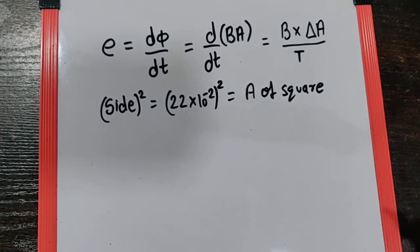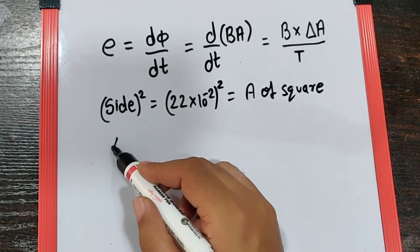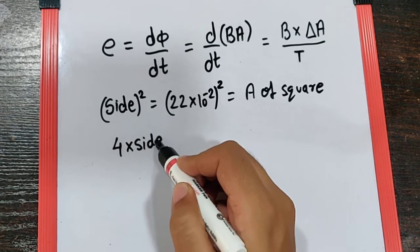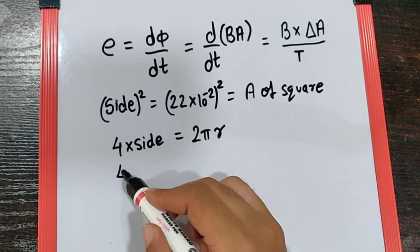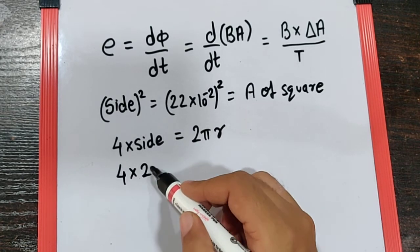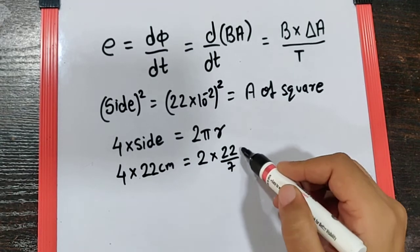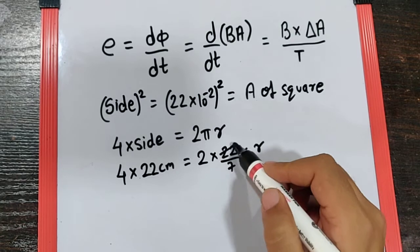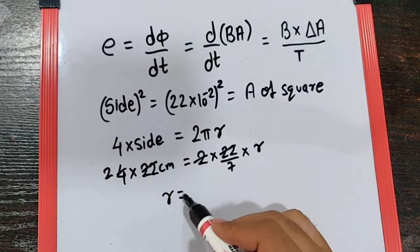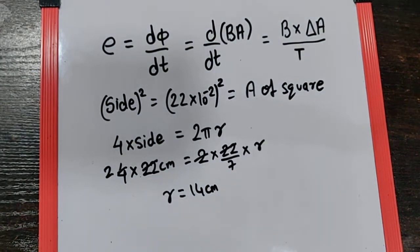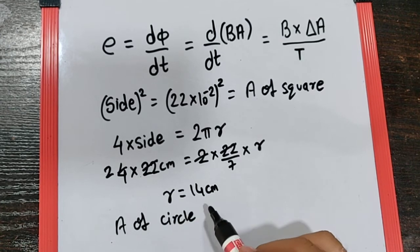And then it is converted into circular loop, so first of all we need to equate their circumference which is nothing but 4 times the side is equal to 2πr. Now if you write the values, I can say 4 into 22 centimeter is 2 into π is 22 by 7 into r. This 22 gets cancelled, 2 to 1, r to 2, so we get the radius as 14 centimeter.